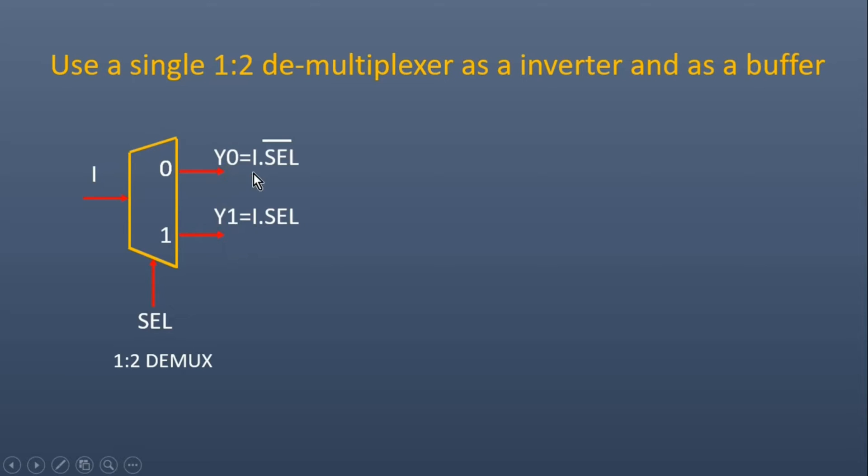Y0 will be equal to I times SEL bar. When select is 0, I will be passed to Y0. When select is 1, I will be passed to Y1. So Y1 is equal to I times SEL.